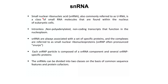Let us now look at snRNAs — small nuclear RNAs, also commonly referred to as U RNAs. This is a class of small RNA molecules found within the nucleus of eukaryotic cells. They do not have introns, they don't have a poly-A tail, and they are non-coding transcripts that function in the nucleoplasm. snRNAs are always associated with a set of specific proteins, and the complexes are referred to as small nuclear ribonucleoproteins, often pronounced as snRNPs.